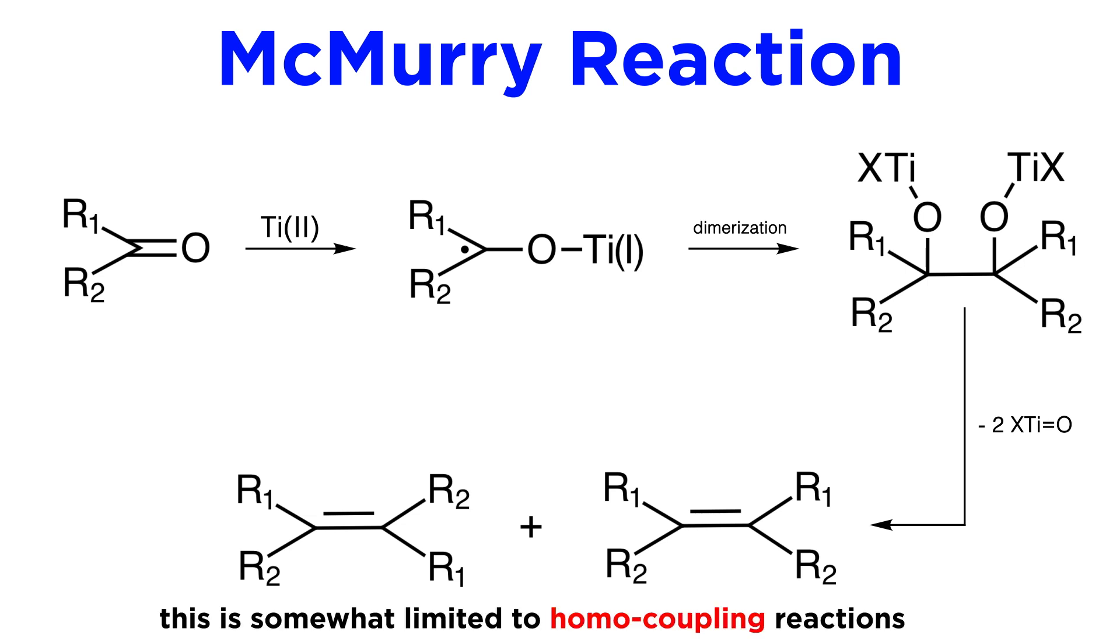From what we have seen so far with this reaction, it is clear that it may be limited to homocoupling reactions, as two different ketones would yield a mixture of four products, with little hope of controlling the product distribution. It is also clear that the problem of E/Z isomerism is a major one, like in every other olefination reaction we will explore.